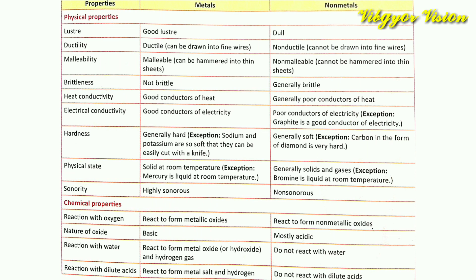Next property is electrical conductivity. Metals are good conductors of electricity, while non-metals are poor conductors of electricity. However, there are exceptions — graphite is a non-metal, but even so it is a good conductor of electricity. Also, metals are good conductors of heat while non-metals are generally poor conductors of heat.